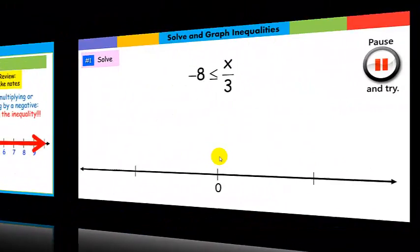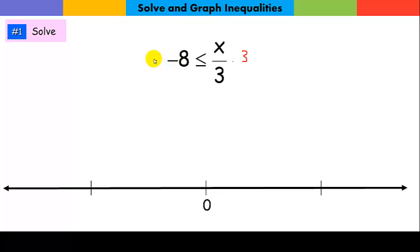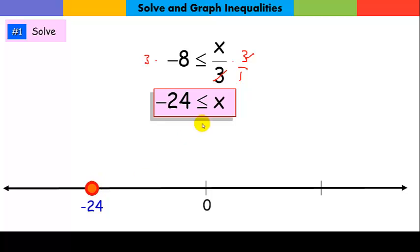For practice problem 1, to get x alone we multiply both sides by 3. The threes cancel and we get x is greater than or equal to negative 24. Our boundary point is at negative 24. For the number line, just draw a line with zero and two tick marks — one for negative, one for positive. The boundary point is closed or filled in, and the arrow shows all x greater than negative 24.